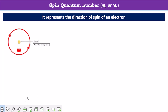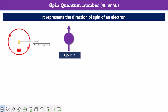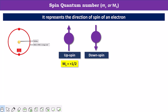Electrons are continuously revolving around the nucleus and each electron has a specific spin. The spin is of two types: one having an upward direction known as upspin, while the other has a downward direction known as downspin. The upspin electron has spin quantum number value plus 1/2, and the downspin electron has spin quantum number minus 1/2. Only the change in sign is observed — upspin has a plus sign, while downspin has a minus sign, and the magnitude is the same.